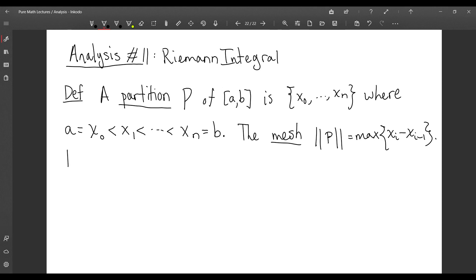Then evaluations are points in each of the intervals of our partition. So we go from one point in the partition to the next and we choose some value, and with this data, although we don't really need the mesh for this,